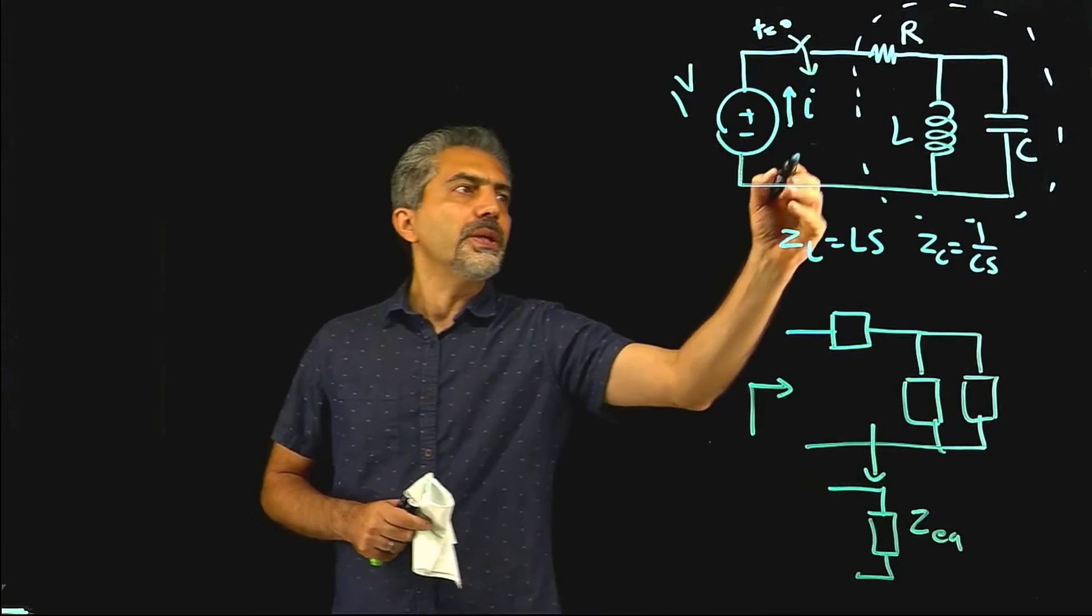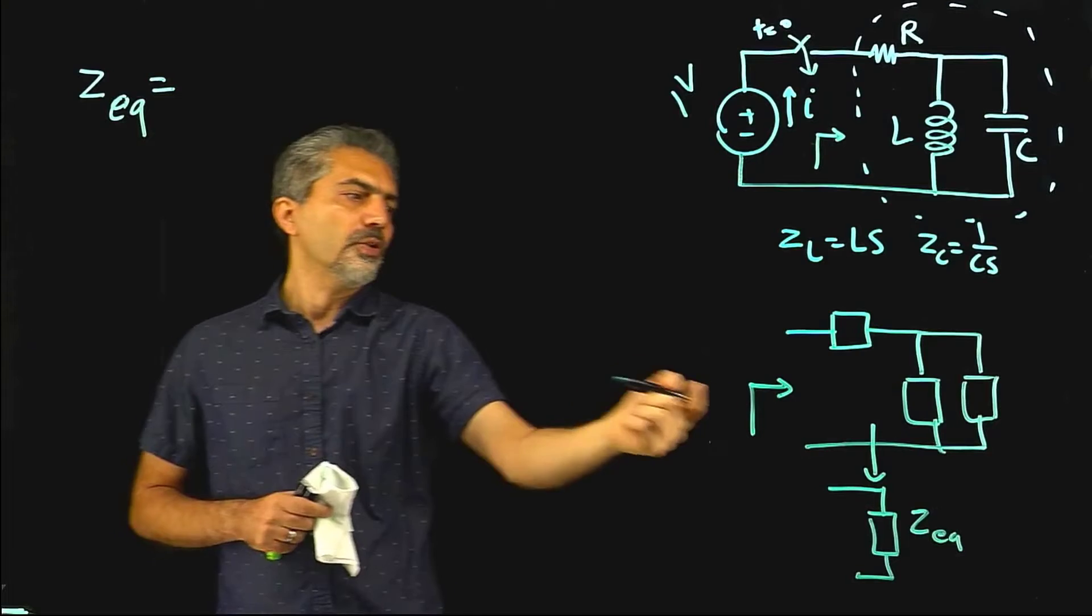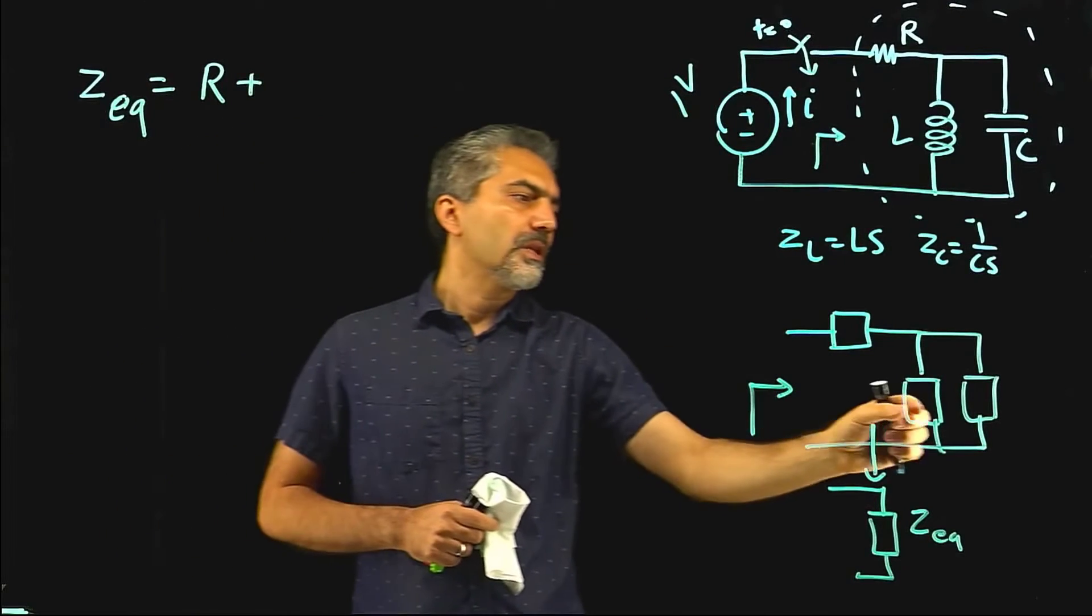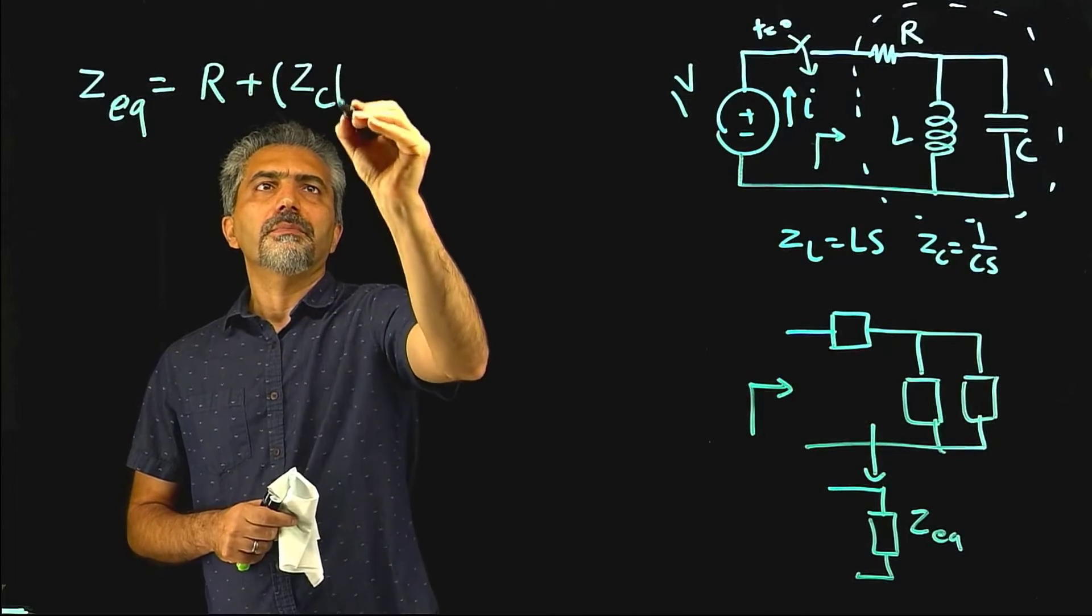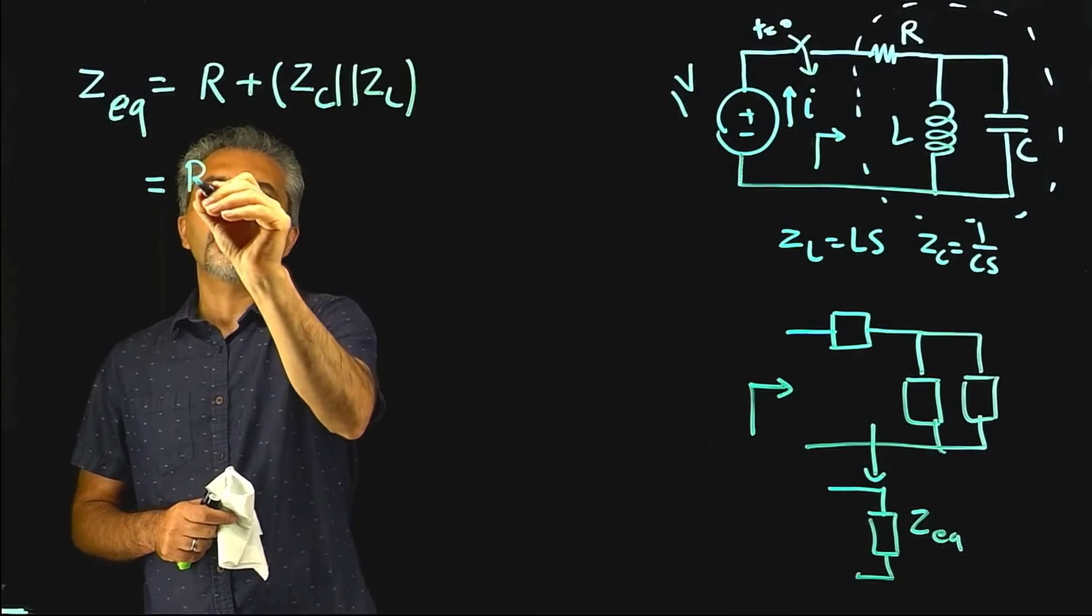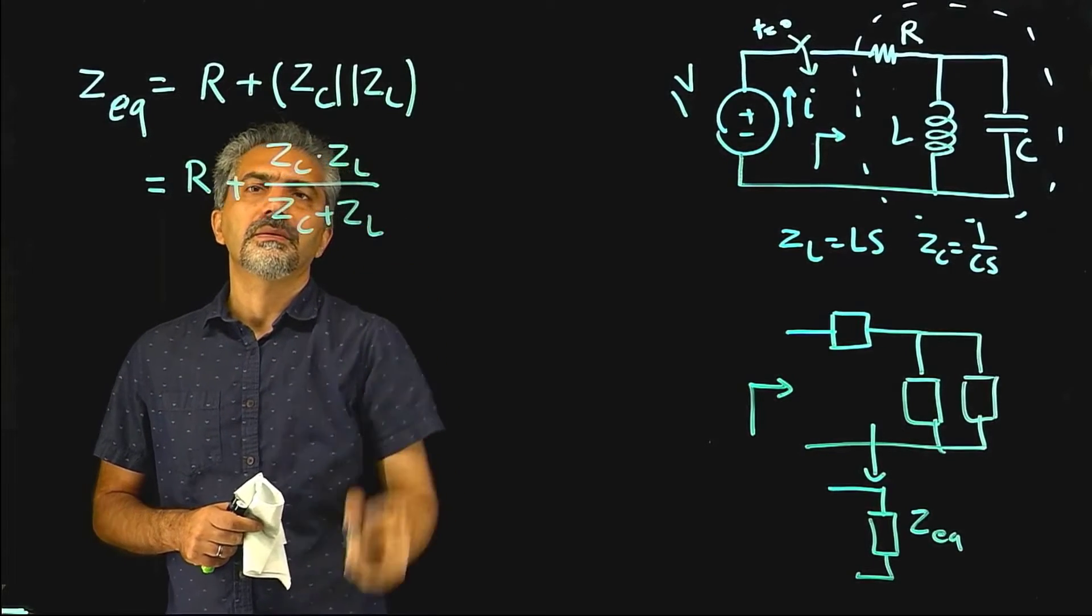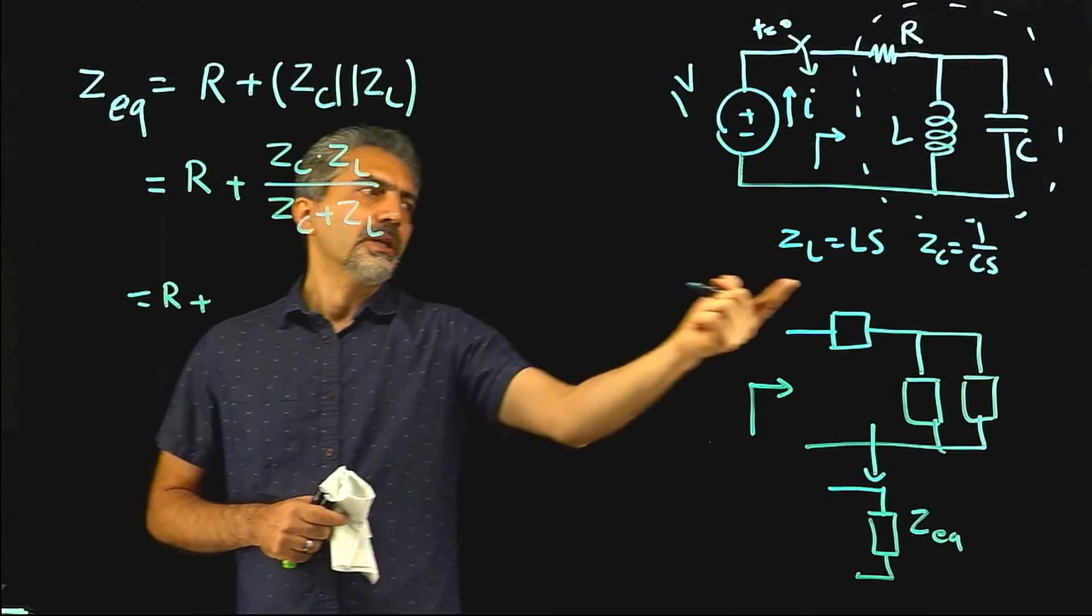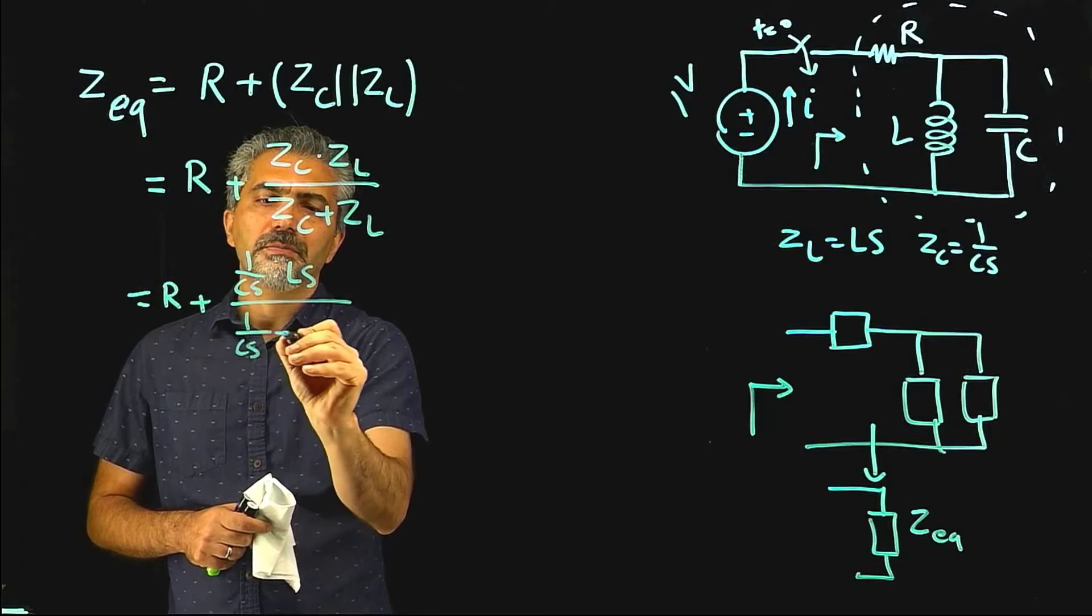I'm just going to say that the equivalent impedance that I see here, so Z equivalent, is simply the equivalent of resistance in the S domain, which is just R, plus the equivalent of capacitor and the inductor in parallel to each other. So I'm going to say ZC in parallel with ZL. And I know how to do that, putting impedances in parallel to each other. That would be R plus ZC times ZL over ZC plus ZL. And I'm just going to use these values and replace them here.